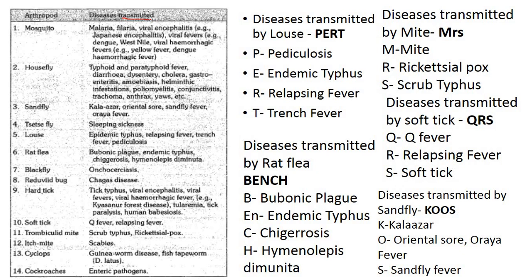In entomology, we look at diseases transmitted by various vectors. For the louse, the mnemonic is PERT: P = Pediculosis, E = Endemic typhus, R = Relapsing fever, T = Trench fever. For rat flea, the mnemonic is BENCH: B = Bubonic plague, E = Endemic typhus, N = (included), C = Chigurosis, H = Hymenolepis diminuta.